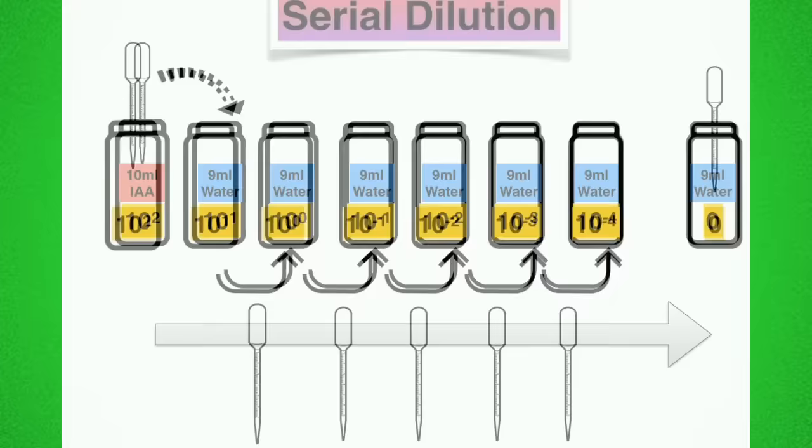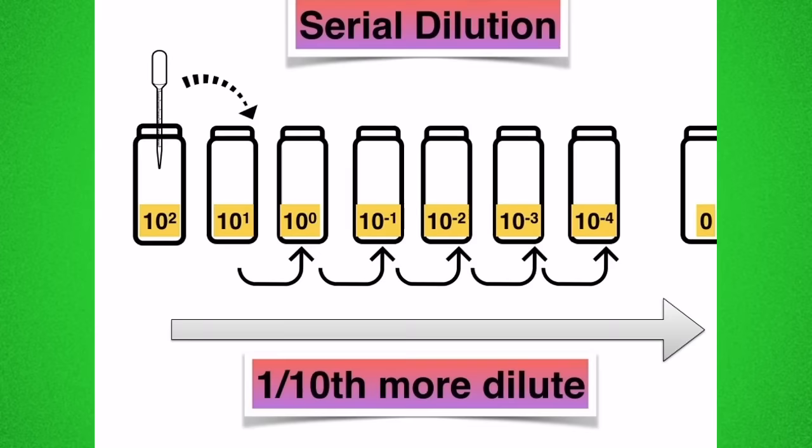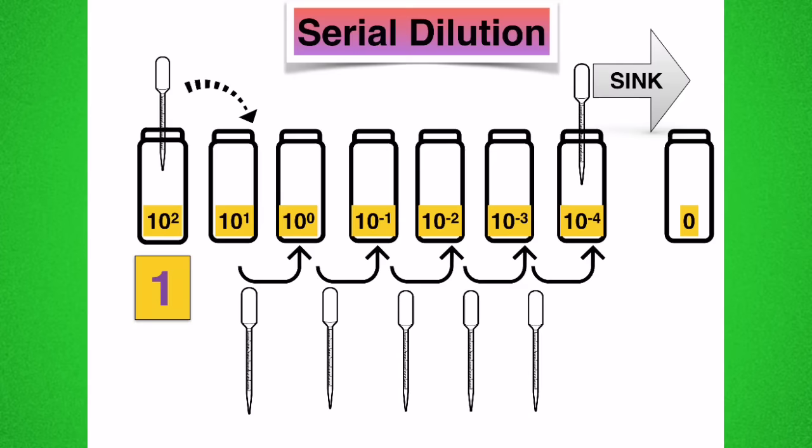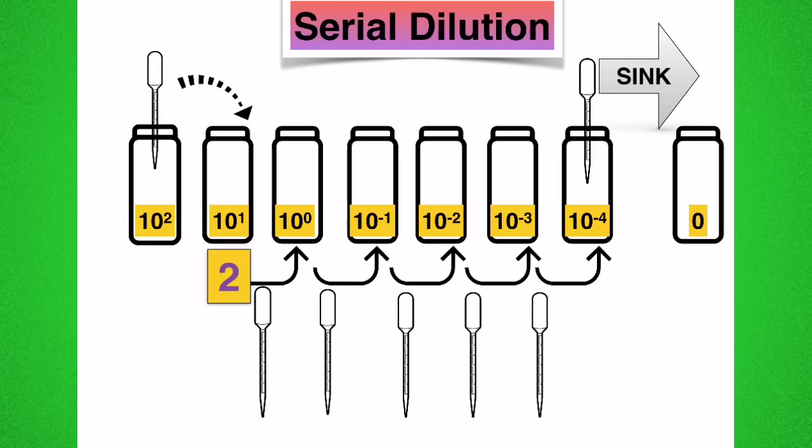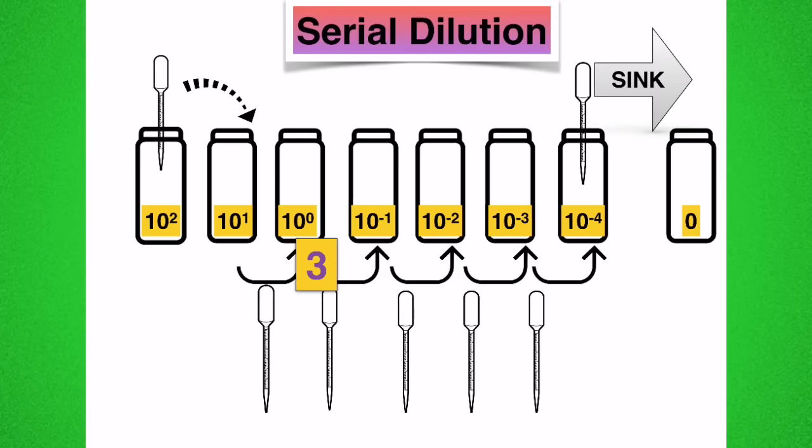And then we began our serial dilution procedure. As we carry out the procedure moving from left to right, each bottle becomes one tenth more dilute than the previous. To begin with we took one mil out of the first bottle which was the stock solution and placed it into the second bottle. After mixing and using a new pipette, we took one mil out of the second bottle and put it into bottle number three. And again after mixing we took one mil out of bottle number three and using a new pipette we placed it into bottle number four.